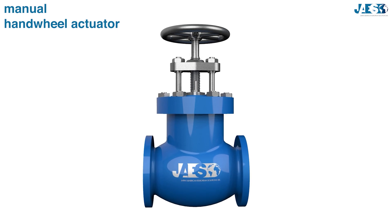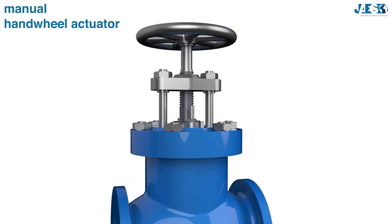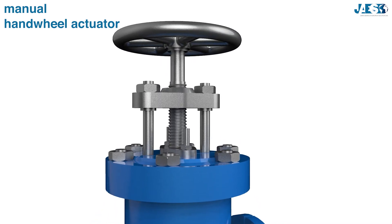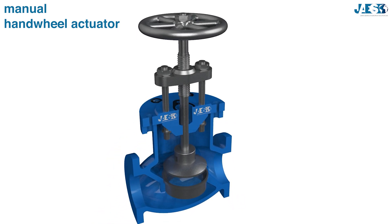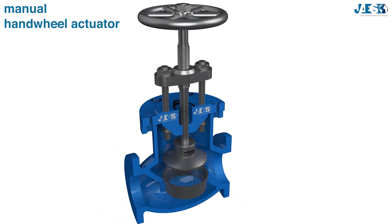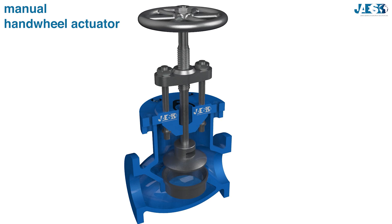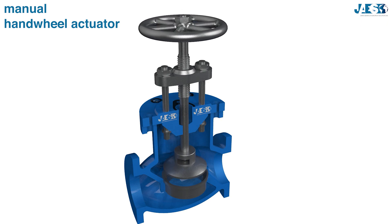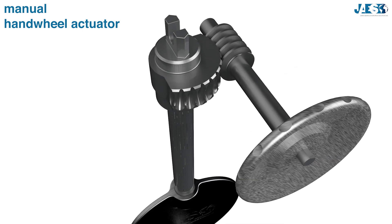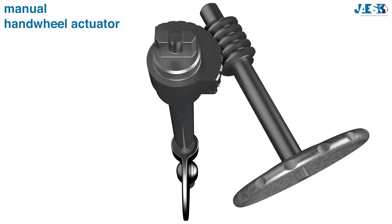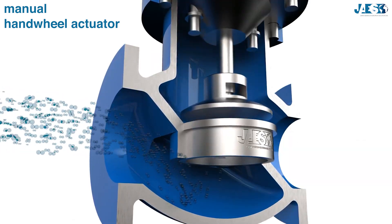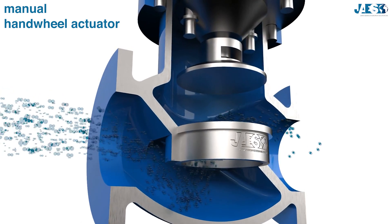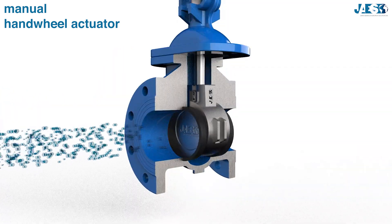The hand-wheel actuator, on the other hand, can be connected to a threaded stem or to a gear train. These allow several turns of the hand-wheel to open and close the disk. For this reason, it is usually used for linear motion valves, in situations where the flow rate must be adjusted and where more clamping force is required. It is therefore mainly used in globe and gate valves.